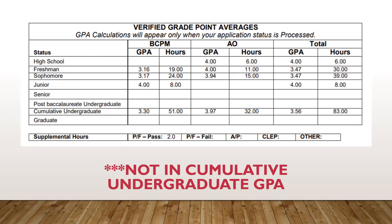Any graduate coursework will appear on its own separate line and will never be combined with your cumulative undergraduate GPA — each stands on its own. For instance, if you have a PhD in English, your graduate coursework would appear on the graduate line under all other subjects. If you earned a master's in biomedical sciences, that would go under BCPM on the graduate line. Those courses and grades will never be combined with your cumulative undergraduate GPA.